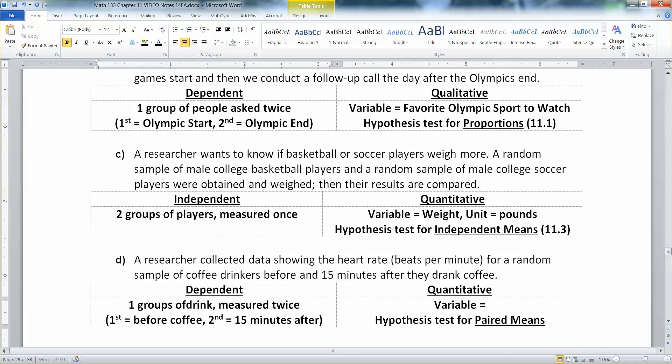You measure them before the coffee, and you measure them after the coffee. And that means your variable would be your heart rate, which, again, has units. So that's kind of a sign that this is quantitative. BPM, beats per minute. And then the hypothesis test you'd be doing is a paired means test, which we learned about in section 11.2.